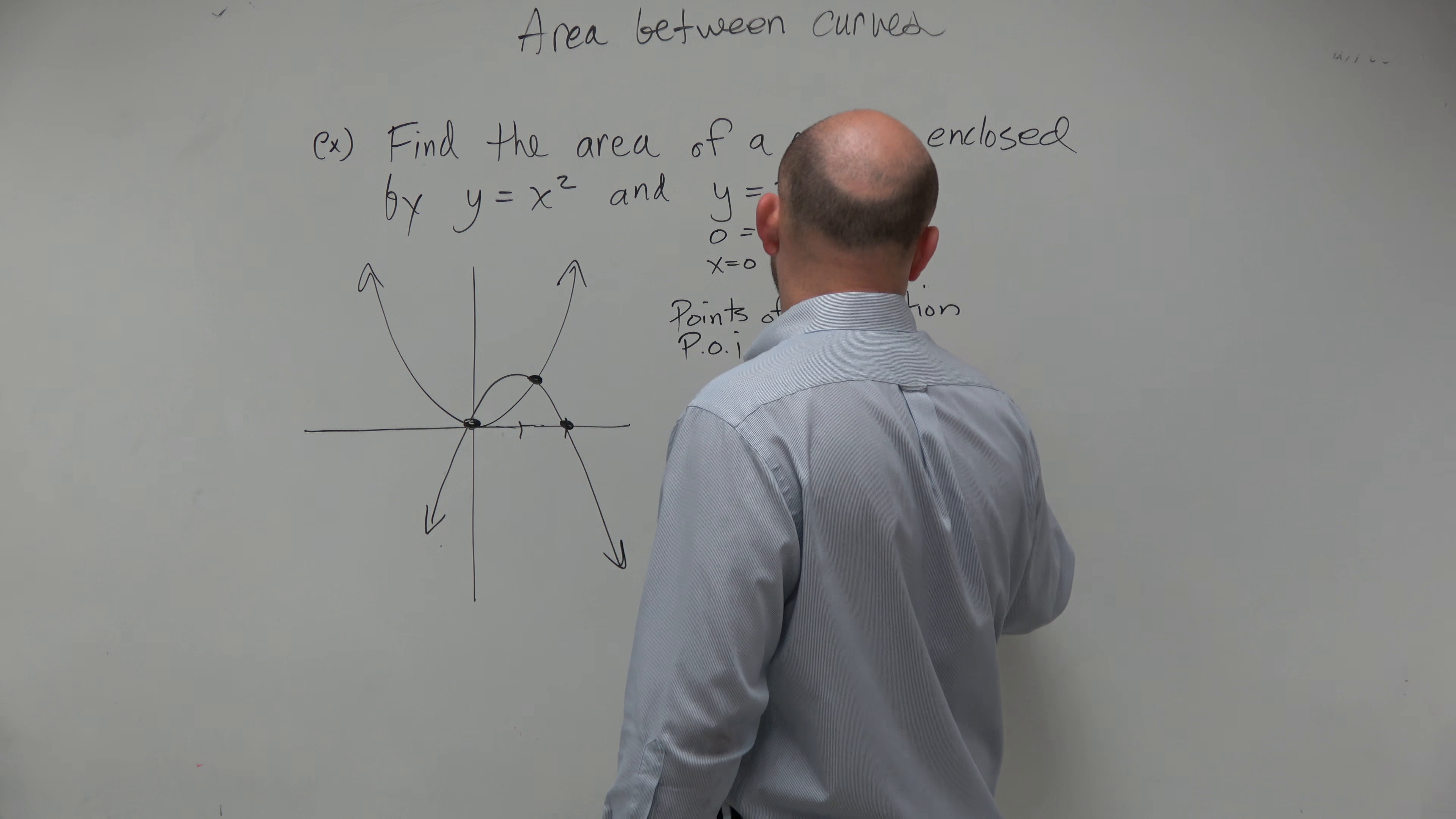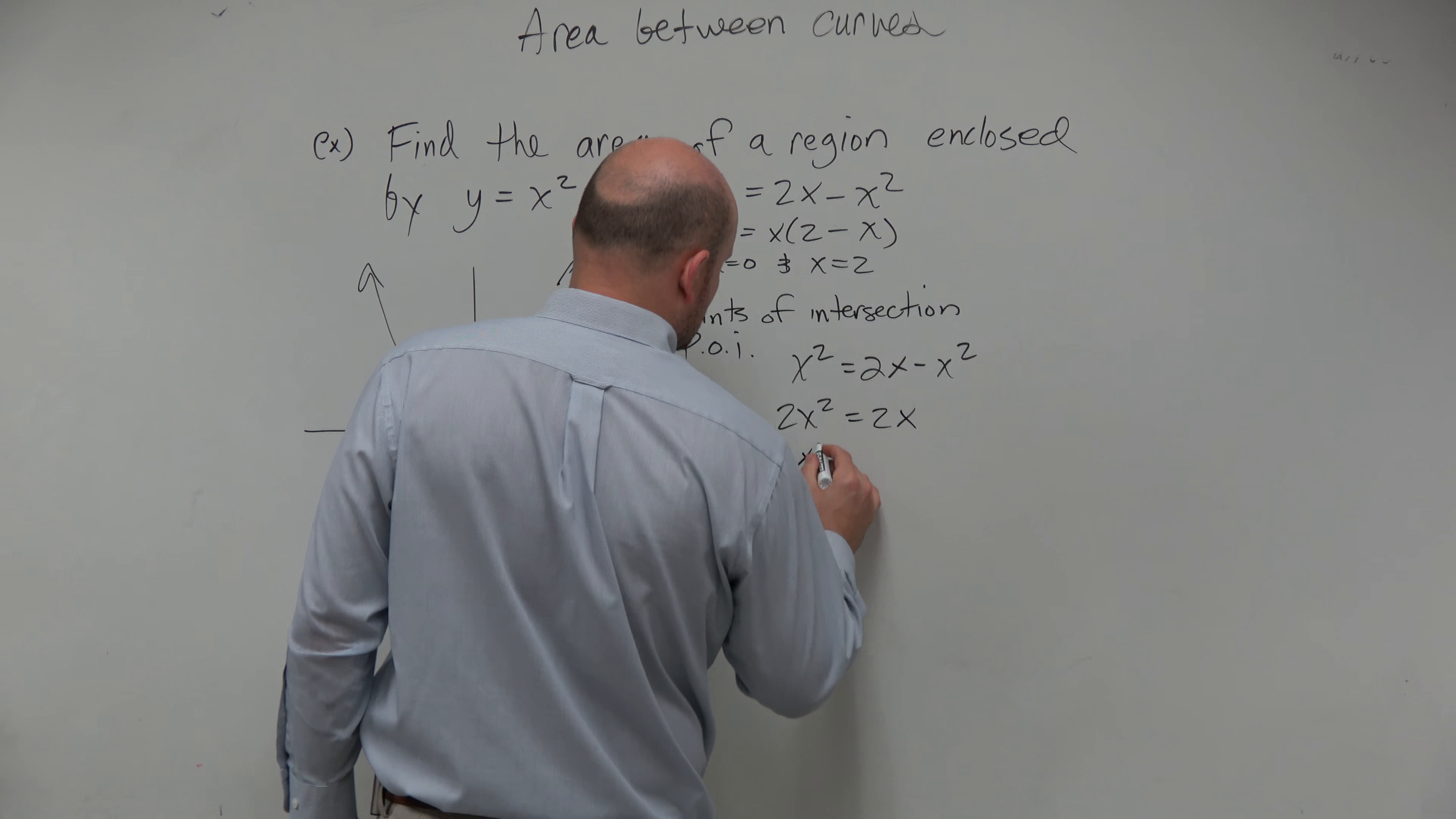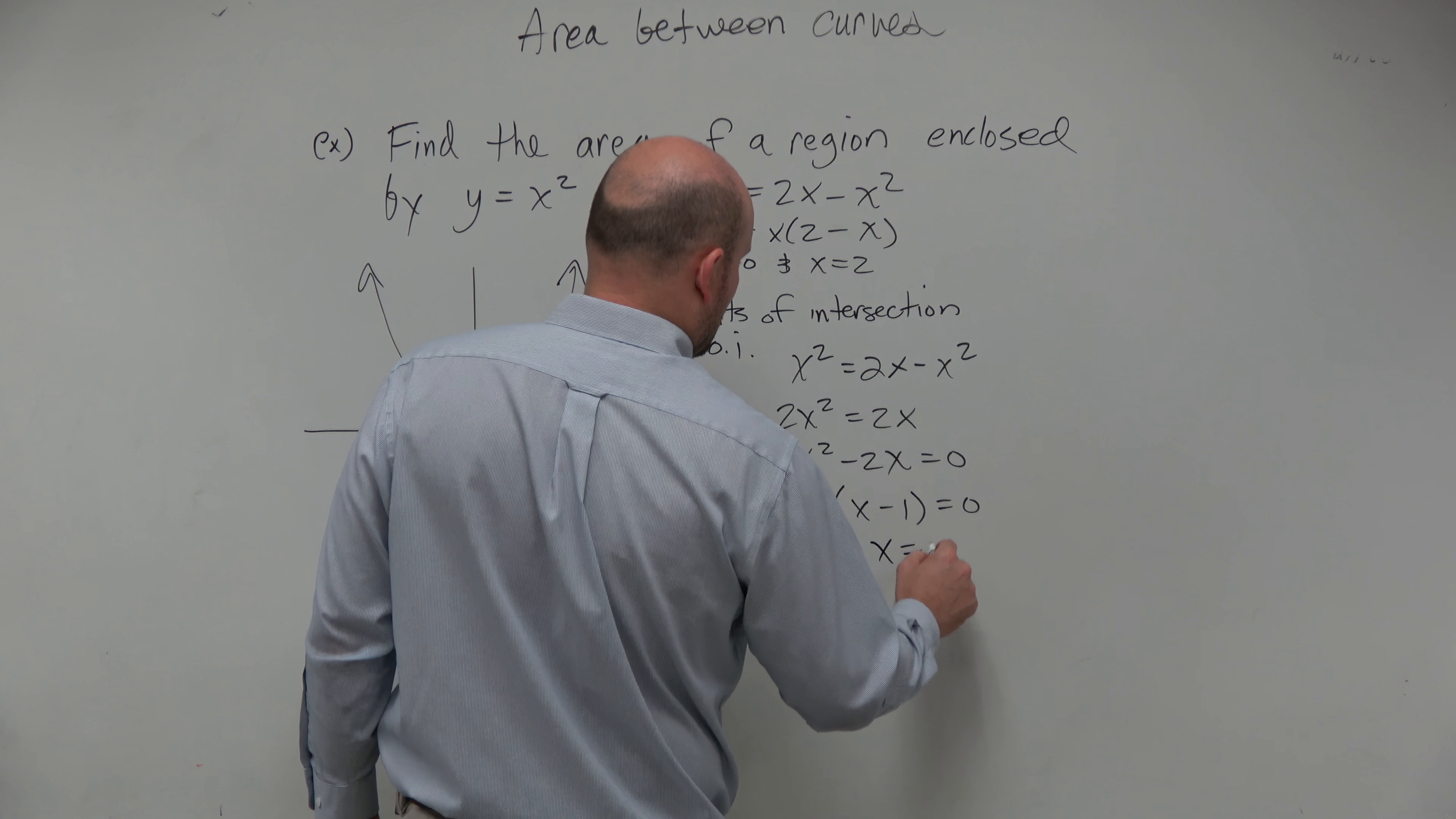x squared equals 2x minus x squared. That's going to at least tell you where the points are equal, and therefore we could add that. So we'd have 2x squared equals 2x. You could do 2x squared minus 2x equals 0. And then you could factor out a 2x, and therefore you're left with x minus 1.